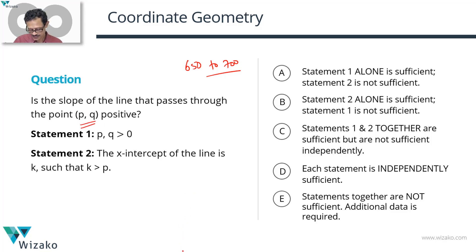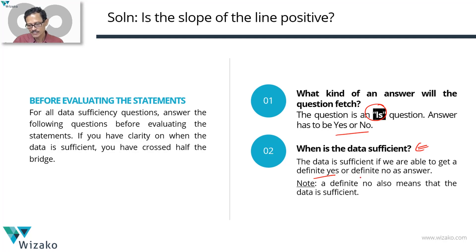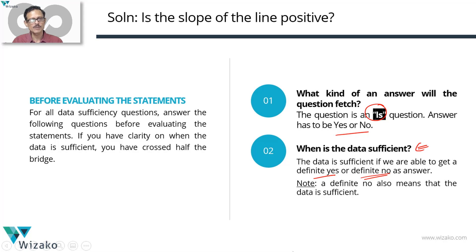Before we delve into the statements, let's get clarity on two things. What kind of answer will this question fetch? It's an 'is' question, so the answer is going to be yes or no. When is the data going to be sufficient? If you get a definite yes — saying the slope of this line is positive — the data is sufficient. Conversely, if you get a definite no — saying the slope cannot be positive — even then the data is sufficient. The data is not sufficient if, despite piecing in the information, sometimes you get a positive sloping line and sometimes a line which is not positive sloping. We're not sure which — that is when the data is not sufficient.